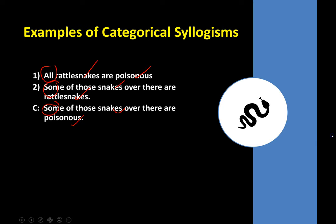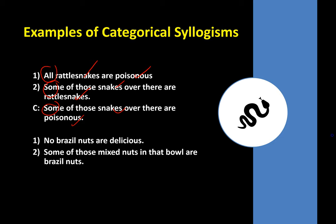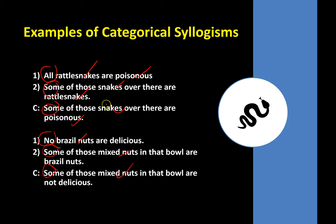Another example: no Brazil nuts are delicious; some of those mixed nuts in that bowl are Brazil nuts; therefore some of those mixed nuts in that bowl are not delicious. We're only looking at validity here, so whether or not you think Brazil nuts are delicious doesn't matter — we're inspecting the form of the argument. The giveaways are 'no,' 'some,' 'some,' and the repeated categories.